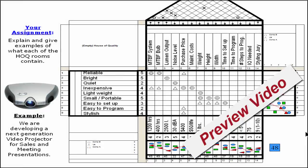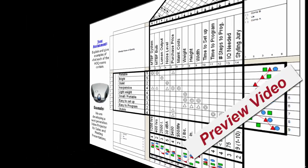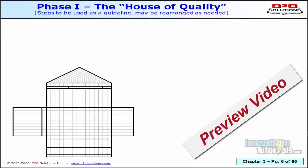But before we do that, I want to show you a flowchart on navigating through the House of Quality. This is the first of two flowcharts I want to show you. This one shows a very logical, sequential, step-by-step process for the order of the rooms to populate in the House of Quality.